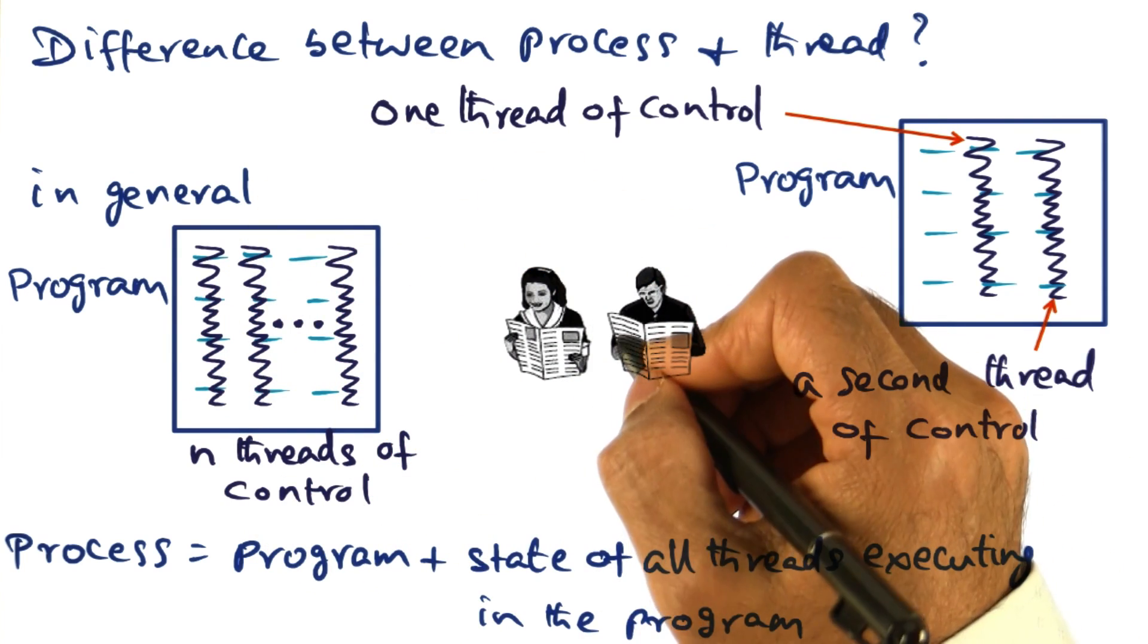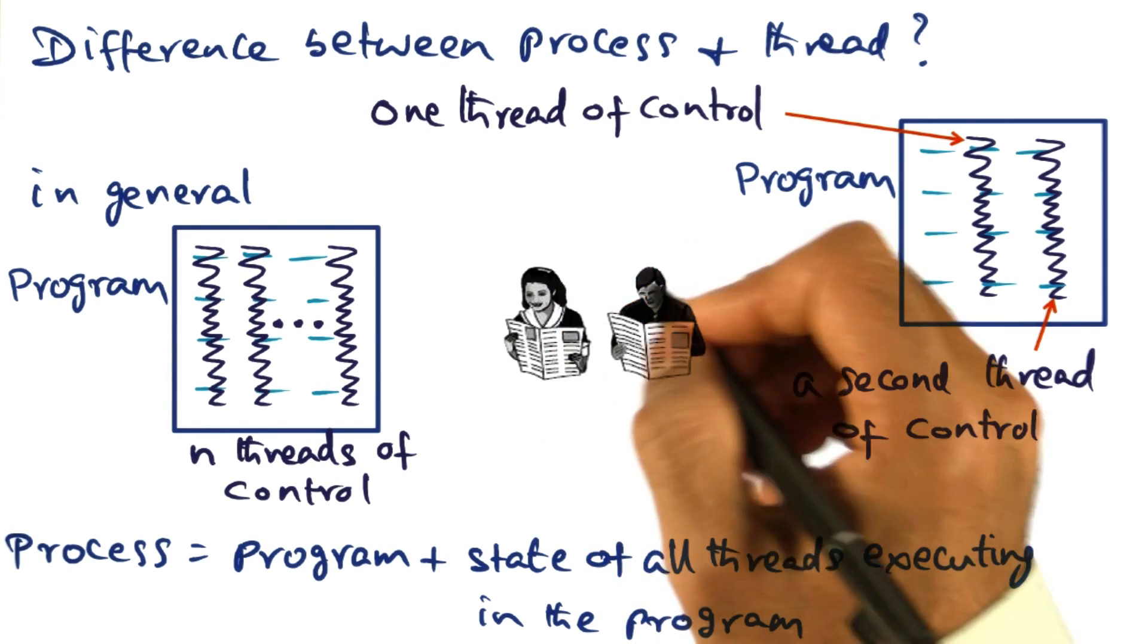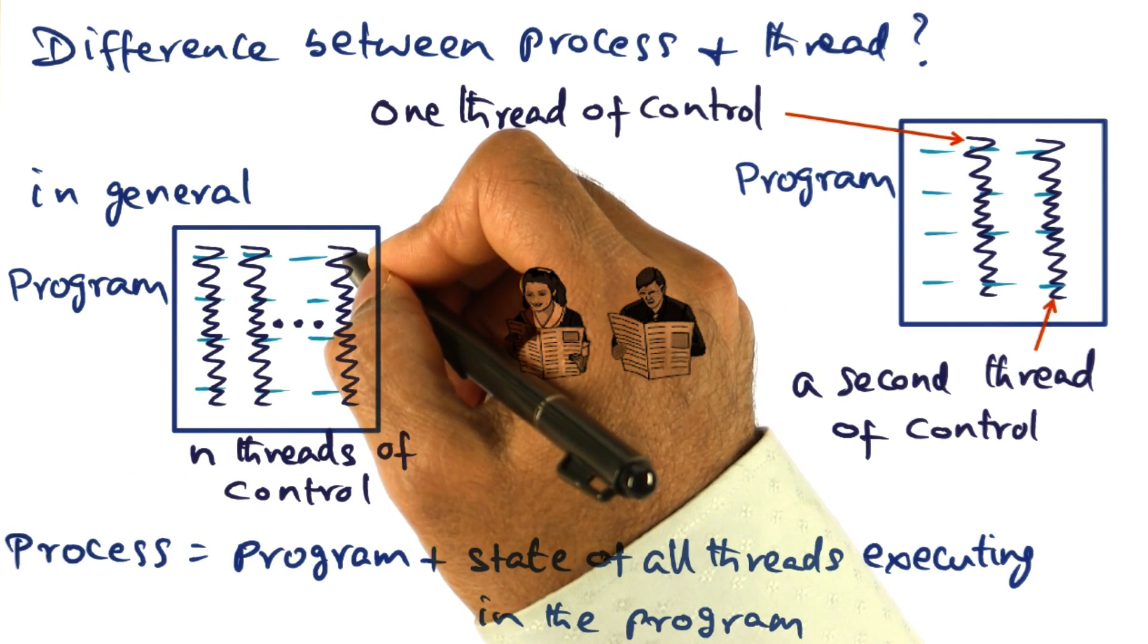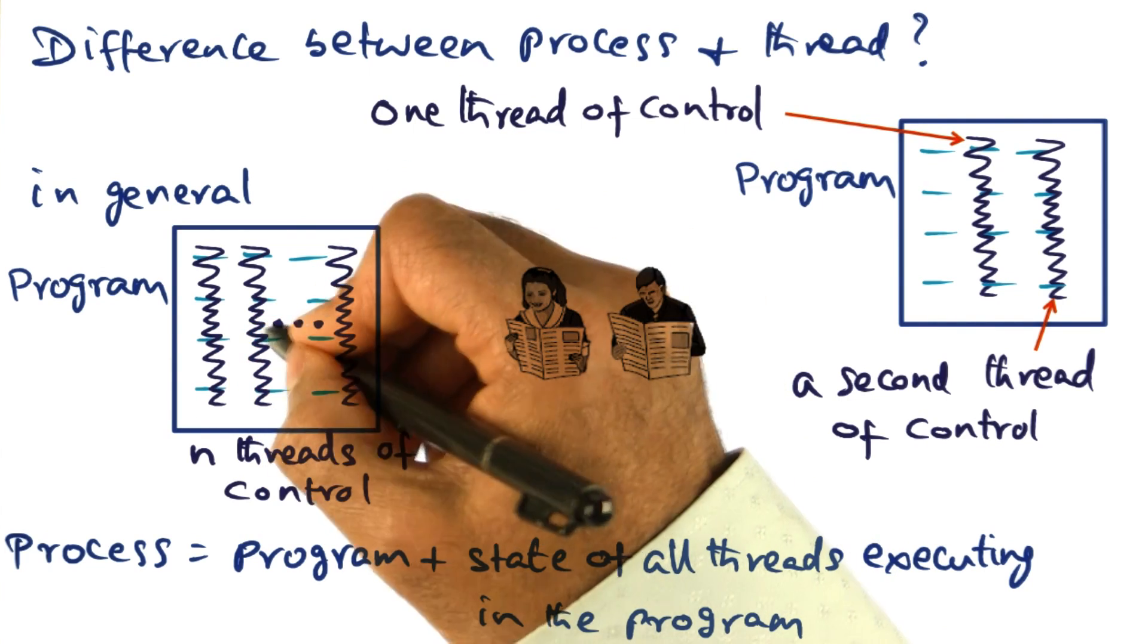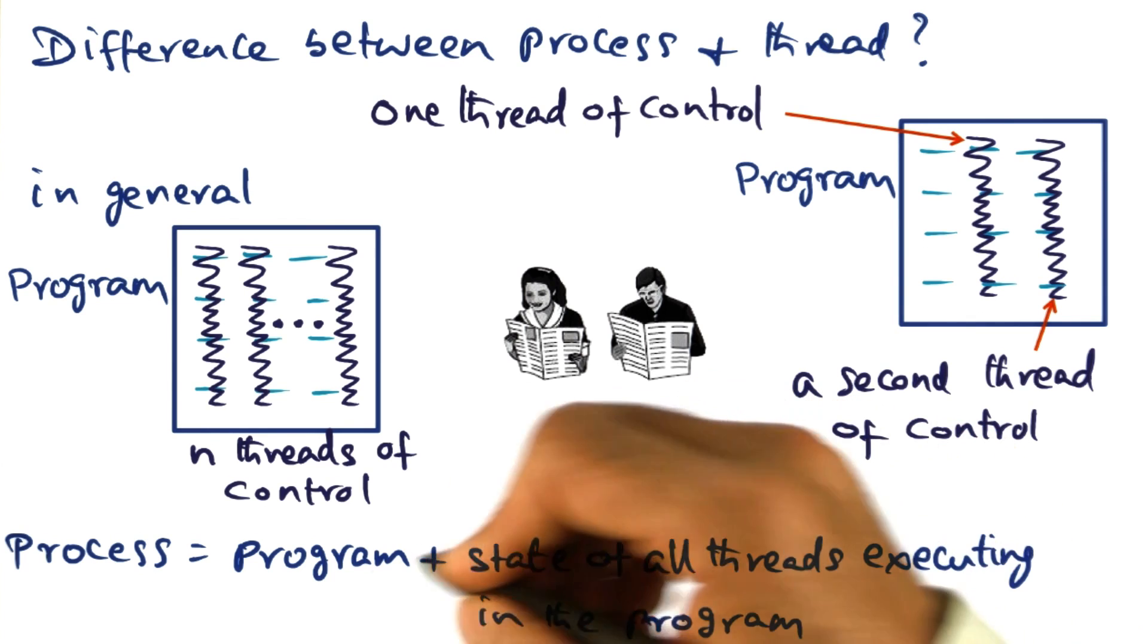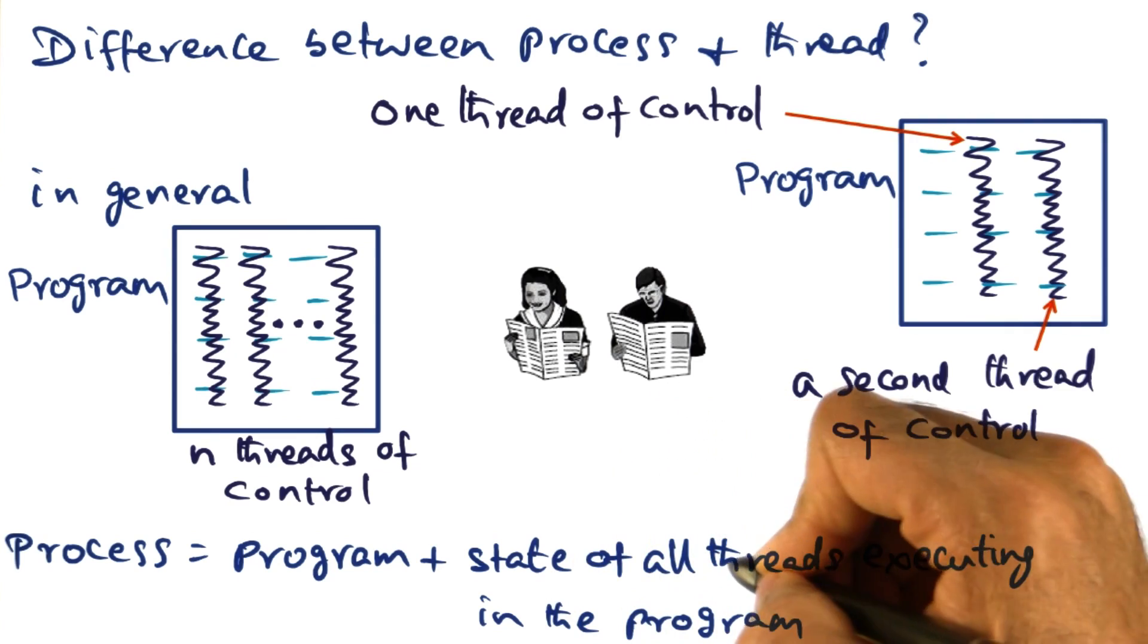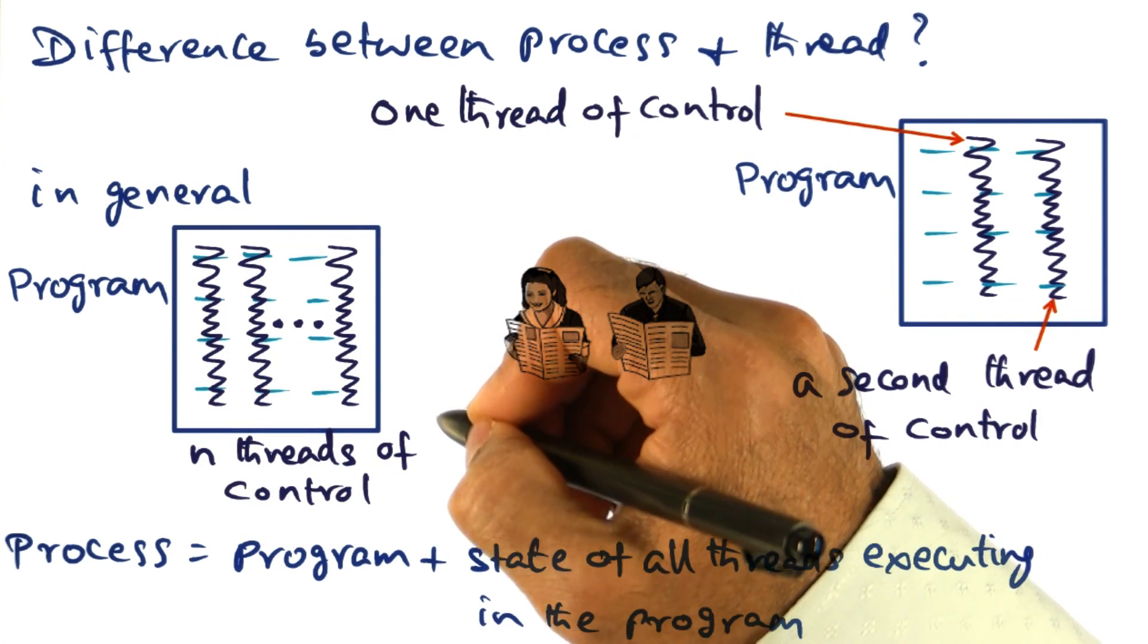Just as a single newspaper could be shared by me, my wife, and possibly my children, in a similar manner, a program may have multiple lives that are coursing through it, and each is a thread of control, and the process is the program in execution, meaning it is the program plus the state of all the threads that are currently executing within this program.